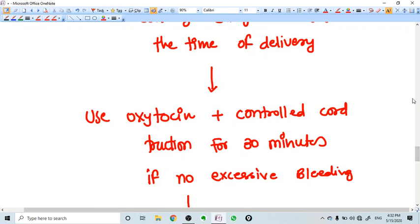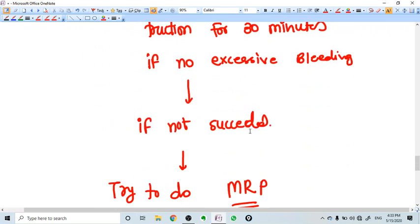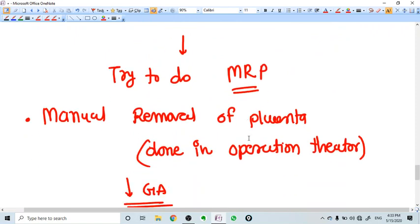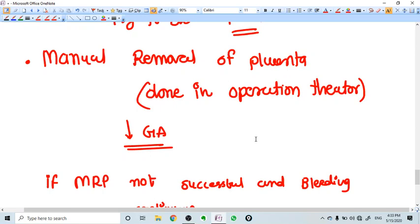And that is uterine tone is not well established. So what we do? We give oxytocin controlled cord traction for 30 minutes if the bleeding is not very severe. Then we can attempt to remove the placenta with oxytocin and controlled cord traction. If we don't succeed with this, then we do manual removal of placenta. But this MRP is done in the operation theater under general anesthesia.